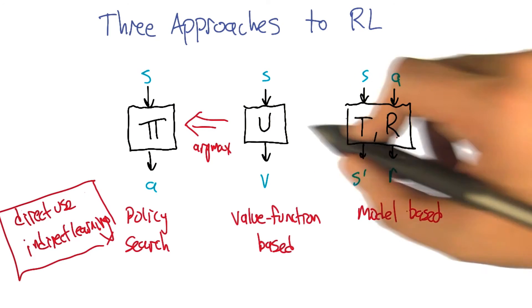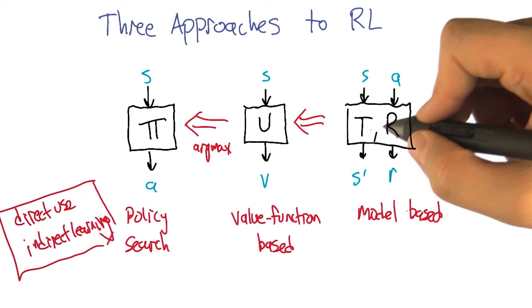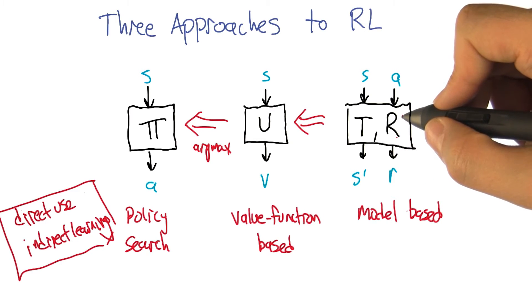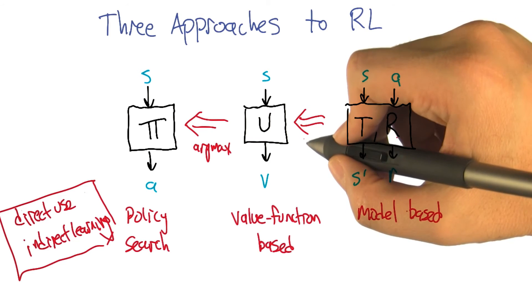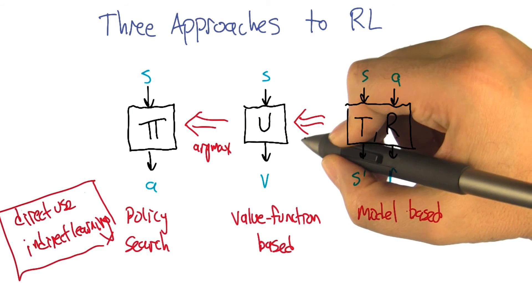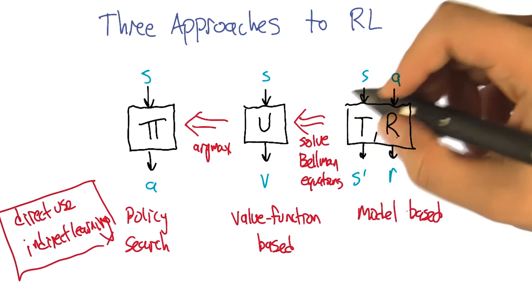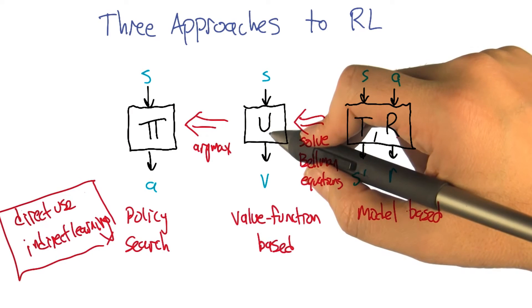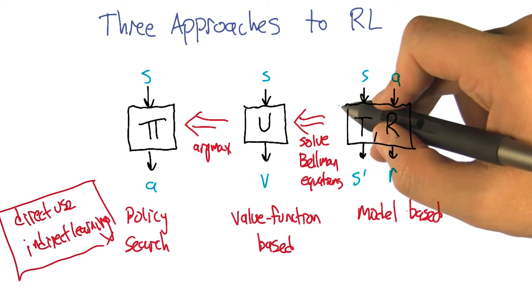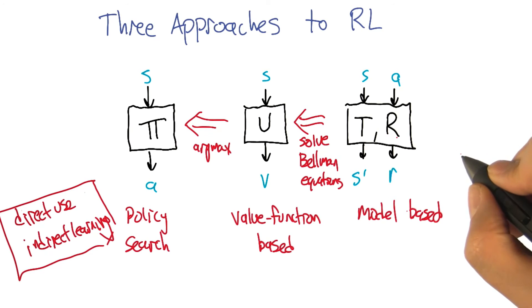So how do we go from T and R to something like U? Well, if we had T and we had R, and we could see the states and the actions we took, then we could do something like the value iteration we did before to learn values. Which value iteration was used to solve the Bellman equations. Right. So that is a somewhat heavyweight computation to do, but it's doable.